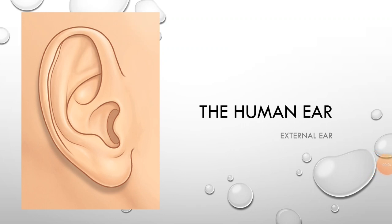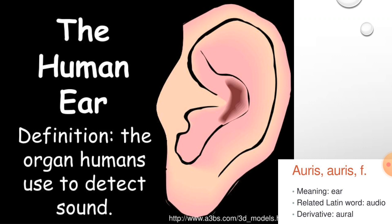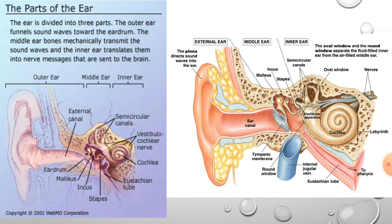Assalamu alaikum, this is Dr. Lubna from the anatomy department, PGMI, and today we're going to learn about the human ear. By definition, the human ear is the organ used to detect sound. 'Auris' is the Latin word used instead of 'ear' as a synonym, and the derivative 'audio' gives us the word 'aural' — anything related to the ear is called aural. The ear is divided into three parts: the outer ear, the middle ear, and the inner ear.